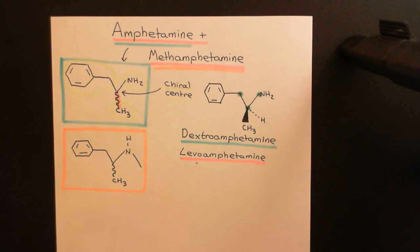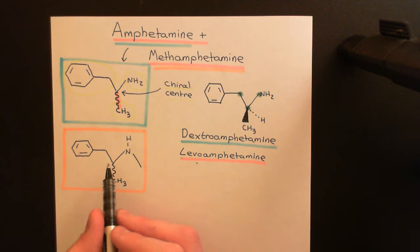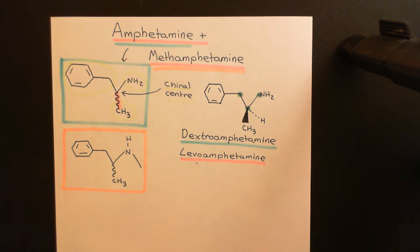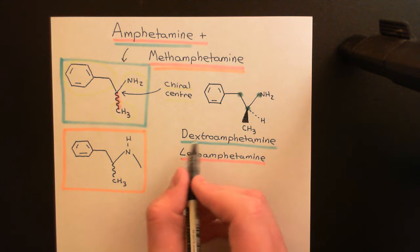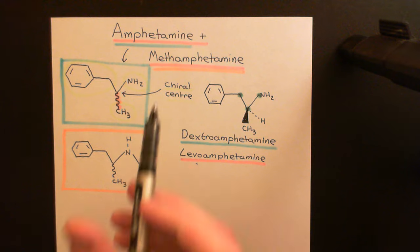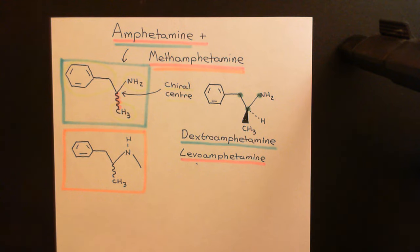There are two optical isomers of methamphetamine just like there are two optical isomers of amphetamine. Either the methyl group can come out of the page towards us and the hydrogen go into the page away — that optical isomer is called dextromethamphetamine or D-methamphetamine. Or the methyl group goes into the page away from us and the hydrogen comes out — that is L-methamphetamine or levomethamphetamine. When someone says they're taking methamphetamine, it means they're taking a mixture of the two optical isomers. And just like for amphetamines, it's the dextromethamphetamine that is the more psychoactive of the two — it is extremely potent at causing psychomotor stimulation, whereas levomethamphetamine is far less potent.